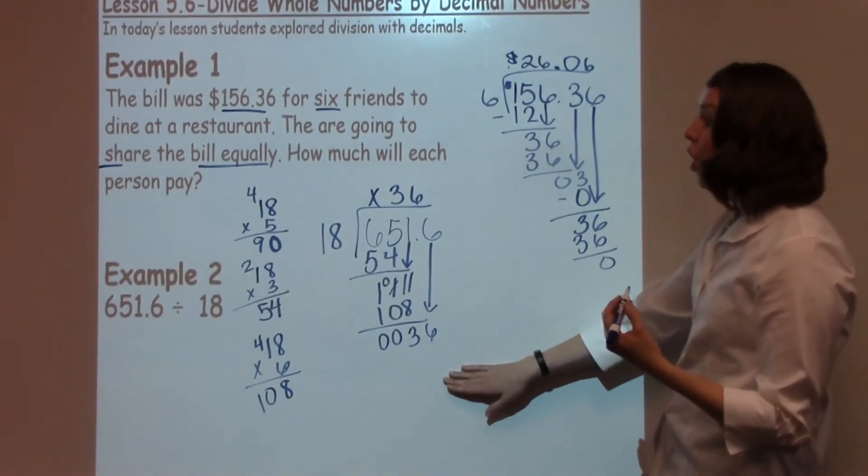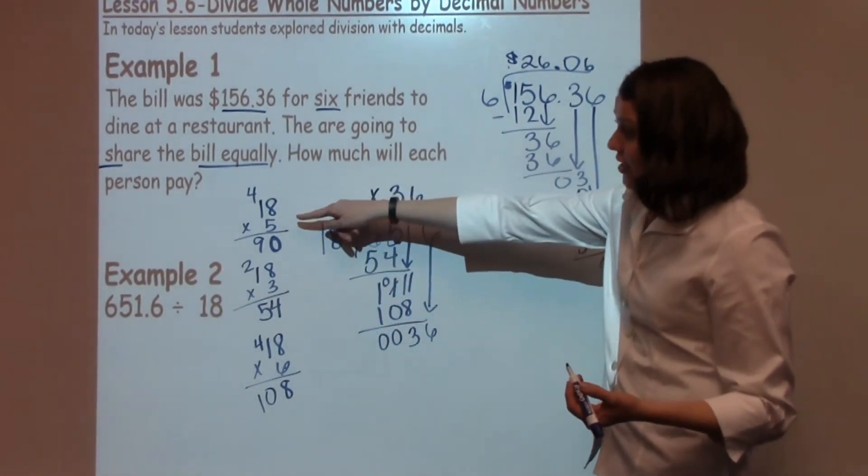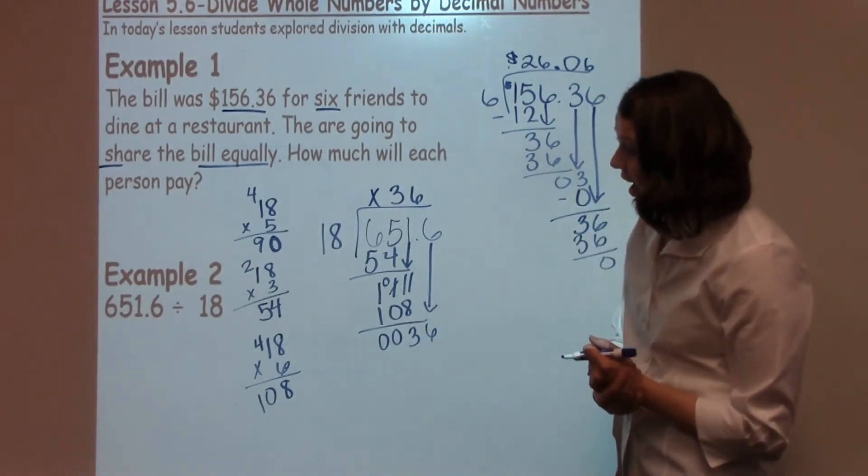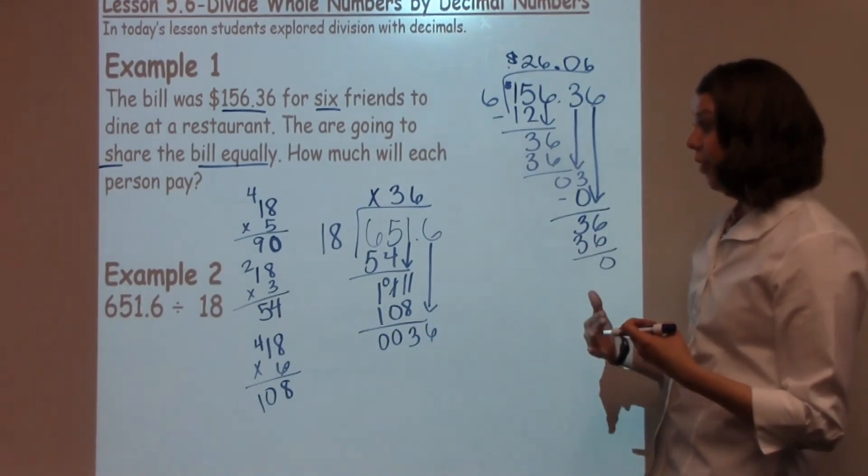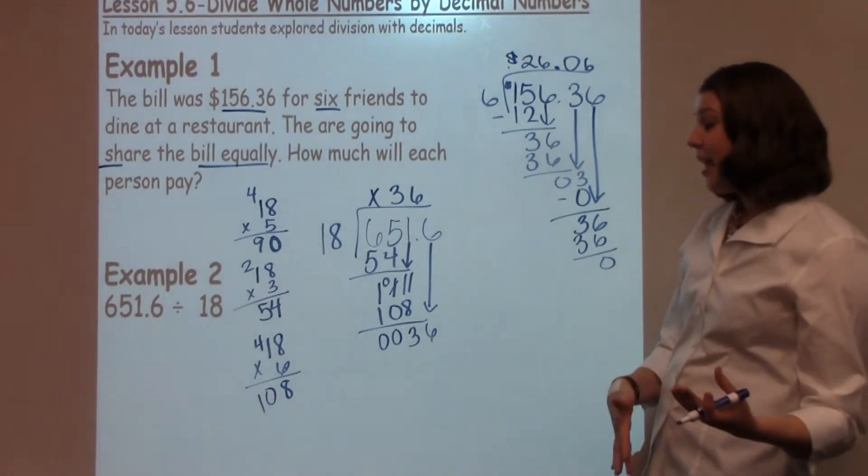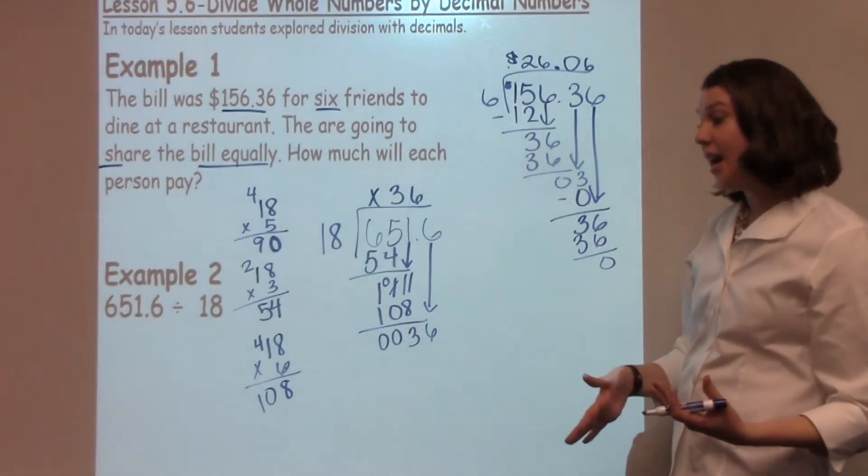Can eighteen go into thirty-six? Well, looking at this, I should see that I have eighteen times three, which is fifty-four. I'm probably going to go down a little bit further. I know eighteen times one is just eighteen, so I'm going to try eighteen times two.